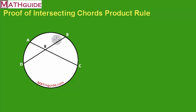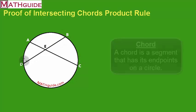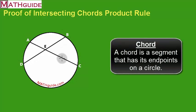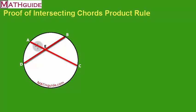Okay, what does the chord product rule say? It says if we've got two intersecting chords, and I do have two chords here because they have endpoints on the circle. If I have intersecting chords, then I know the pieces of this chord multiplied together equal the pieces of this chord multiplied together.